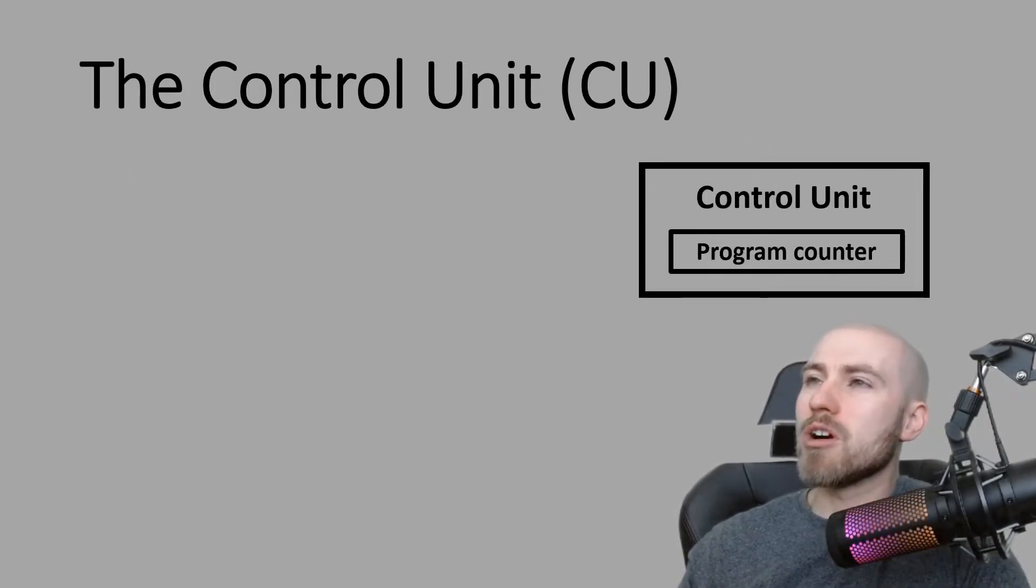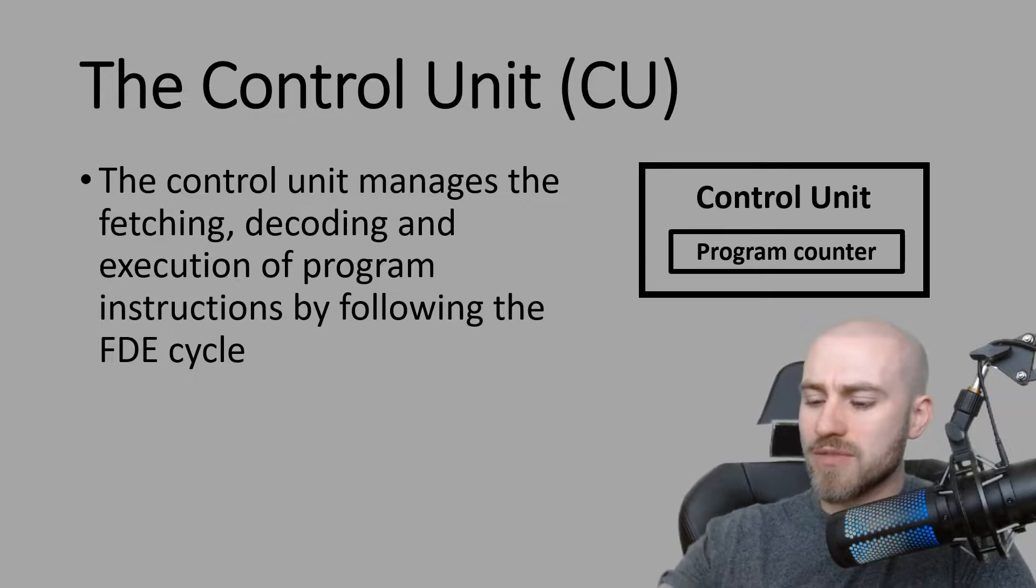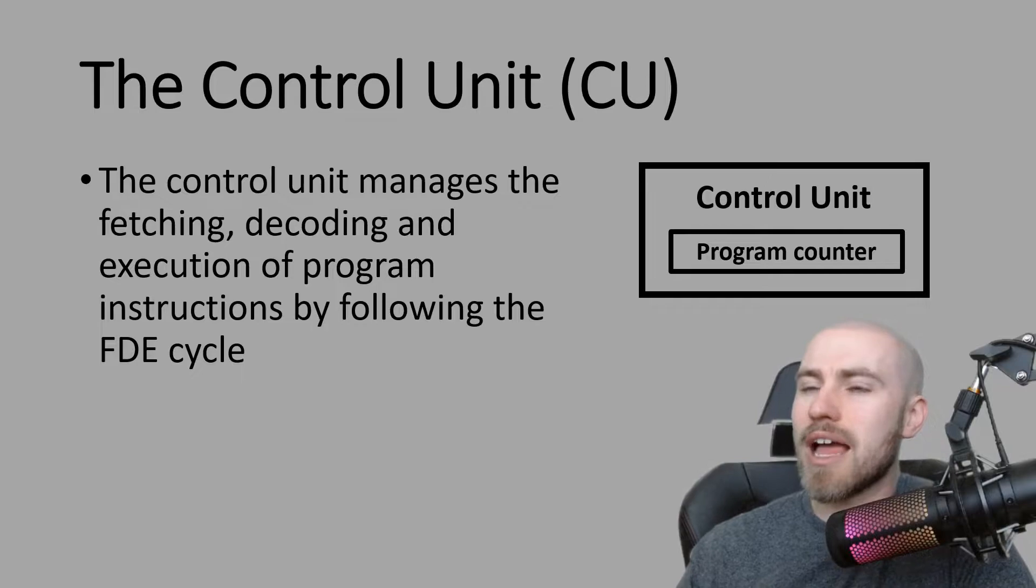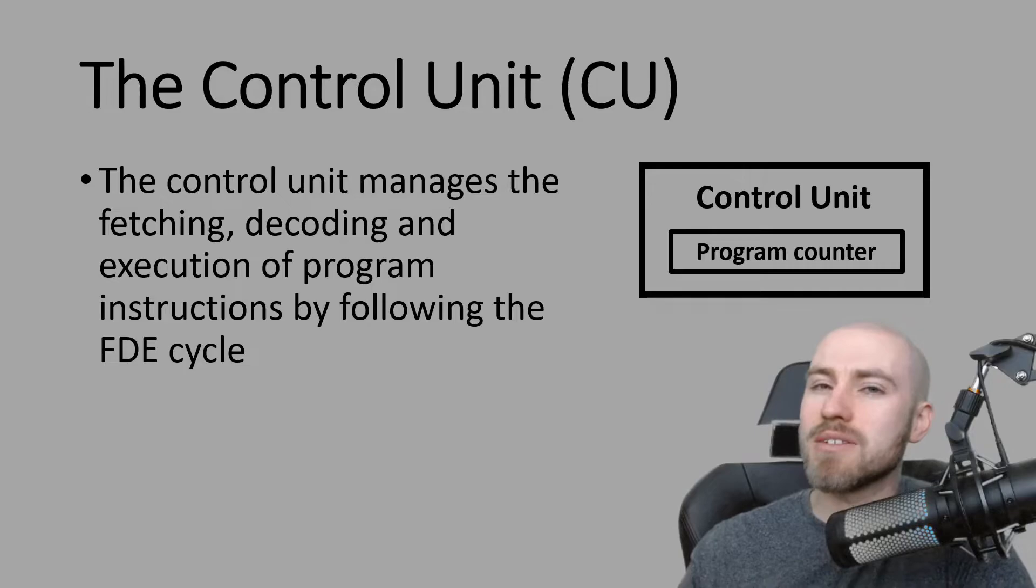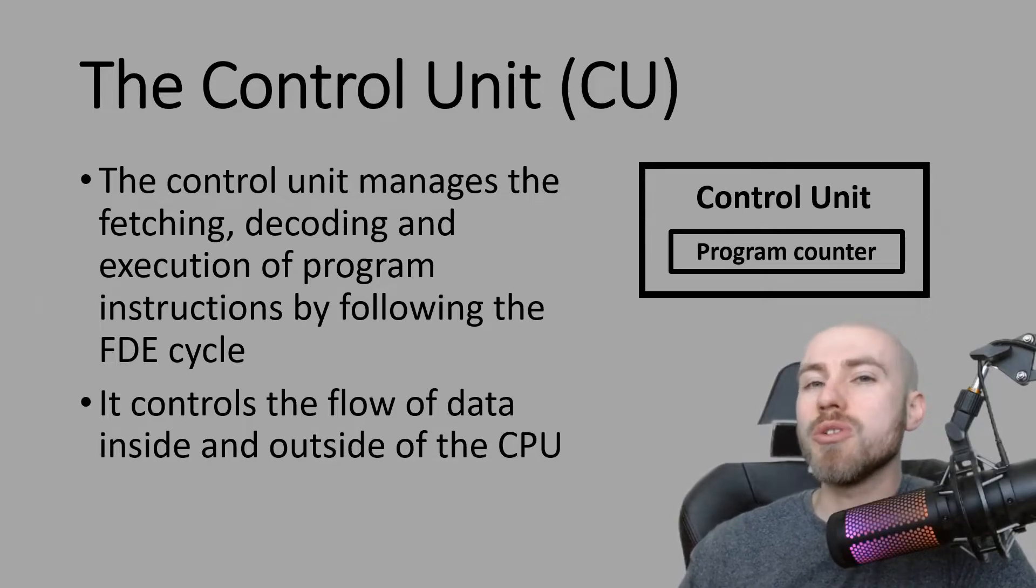So we're going to start by talking about the control unit. Now the control unit manages the actual FDE cycle which we've talked about before. So it manages the fetching of the instruction itself. Once it's fetched it and brought it back, it will then decode that instruction and it will execute the instruction, which as we know are the three main steps that are repeated billions of times in one second in the FDE cycle. So if data needs to be moved around the CPU or maybe moved back into main memory, then the control unit is the part of the CPU which will actually do that.